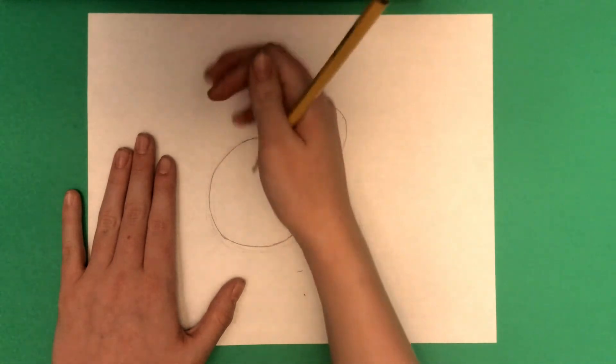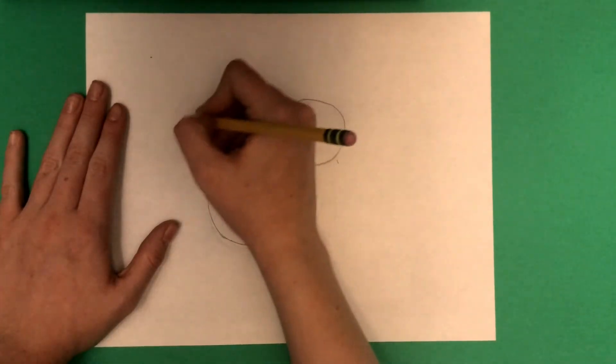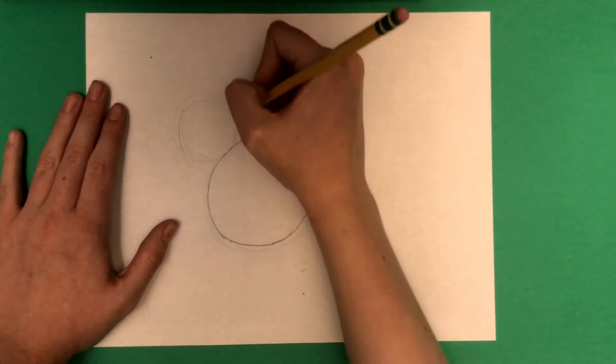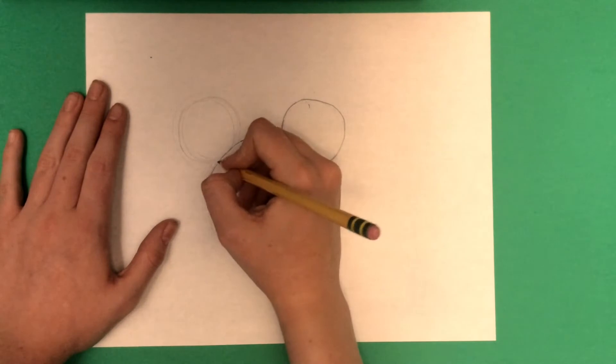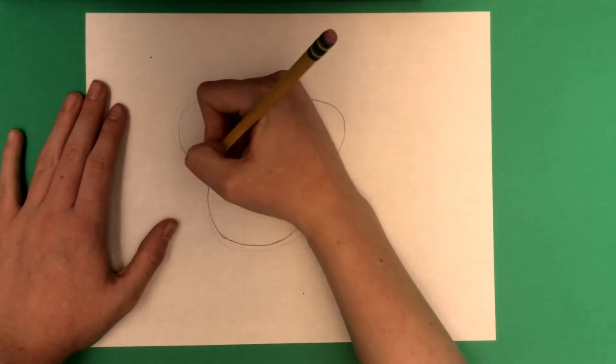Now that we're done with that, we're just going to do the exact same thing to the other ear. Just go around in a circle over and over again. Then choose the right circle. Once you're done with that, you're going to have to darken up those lines. Just choose your favorite one and darken it up.